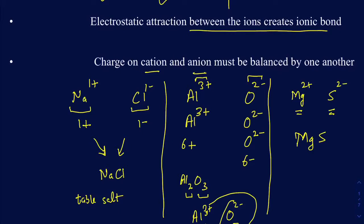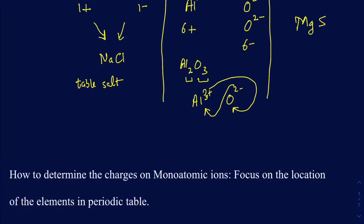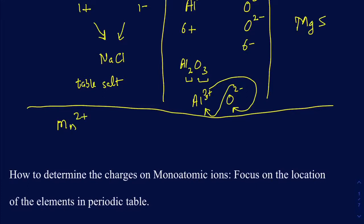Make sure your charges are balanced when putting the anion and cation together. Let me take one more example. Assume I have manganese 2+ and SO₄²⁻ — a polyatomic anion we'll talk about in a minute. Since you've got 2+ and 2−, the charges are already balanced. So you need one manganese and one sulfate to offset the charges.